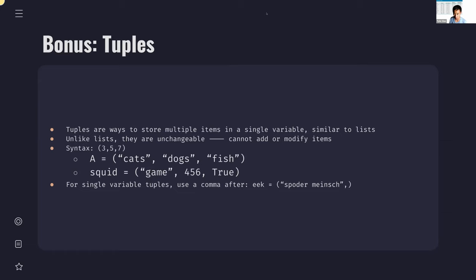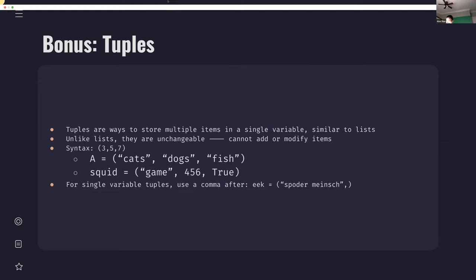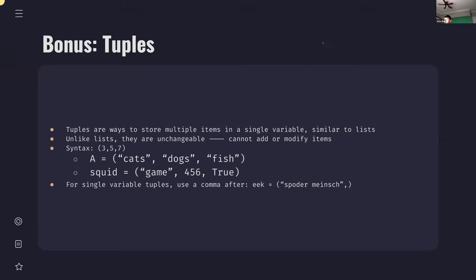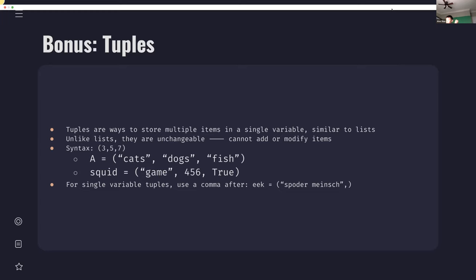Here's a bonus slide on tuples. These are kind of like lists — you can store multiple items in a single variable and they can be different types. But these are unchangeable: you can't add or modify them. Once you've made a tuple, you can't change it afterwards. You can make a copy, and there are some tuple methods you can look up, but just keep in mind that they're a data type.